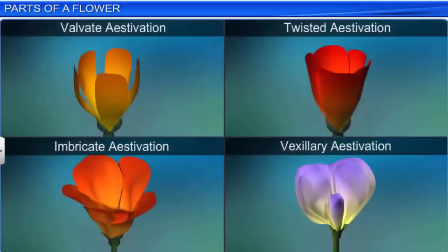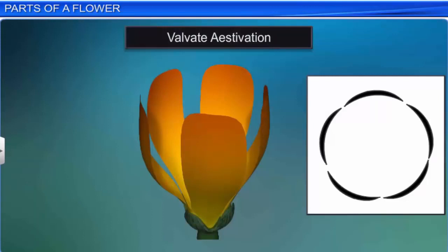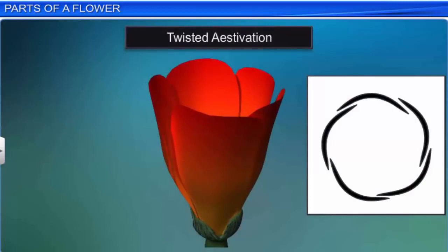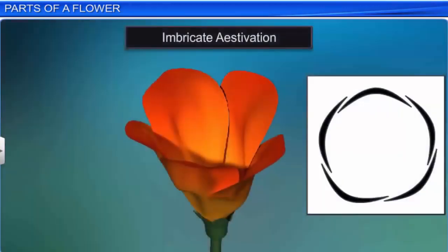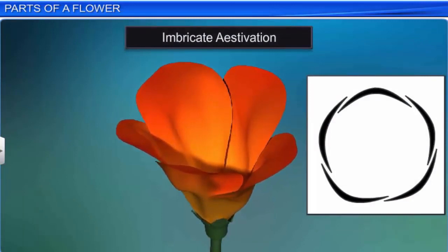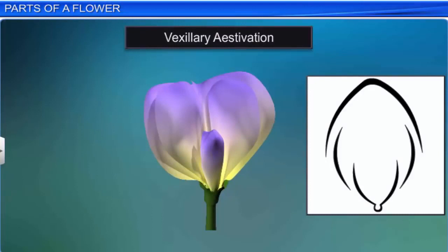Estivation is of many types; the main ones are valvate, twisted, imbricate, and vexillary. In valvate estivation, the sepals or petals within a whorl touch each other at the margin with no overlapping. In twisted estivation, one sepal or petal overlaps the next one and so on. In imbricate estivation, the margins of the sepals or petals overlap one another but in no particular direction. In vexillary estivation, each sepal or petal covers the sepal or petal that is within it.